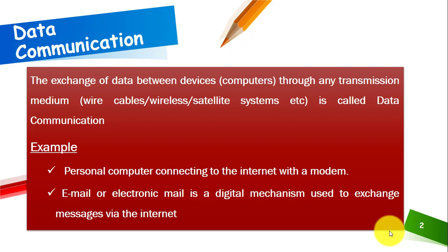We have a few examples: a personal computer connected to the internet with a modem, or electronic mail used to exchange messages via the internet. If you send messages between two different smartphones, that is also an example of data communication. A phone call is also an example. If you are communicating through Facebook, WhatsApp, IMO, or any other social media app with another person, this is also an example of data communication.